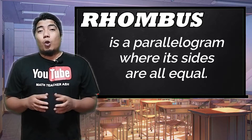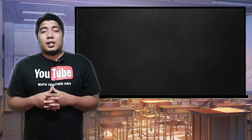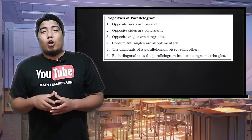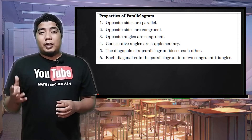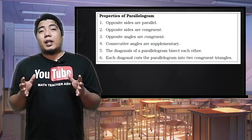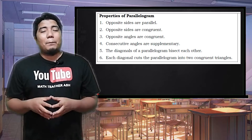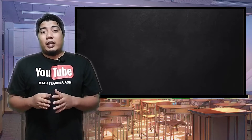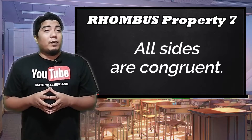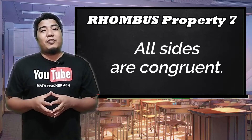The next question is: what are the properties of a rhombus? The same as what we discussed in rectangles, a rhombus also acquires the properties of the parallelogram, meaning the first to the sixth property of a parallelogram is also available in a rhombus. With regards to the rhombus, it has an additional three properties. The first additional property is that all of the sides of a rhombus are congruent, based on the definition.